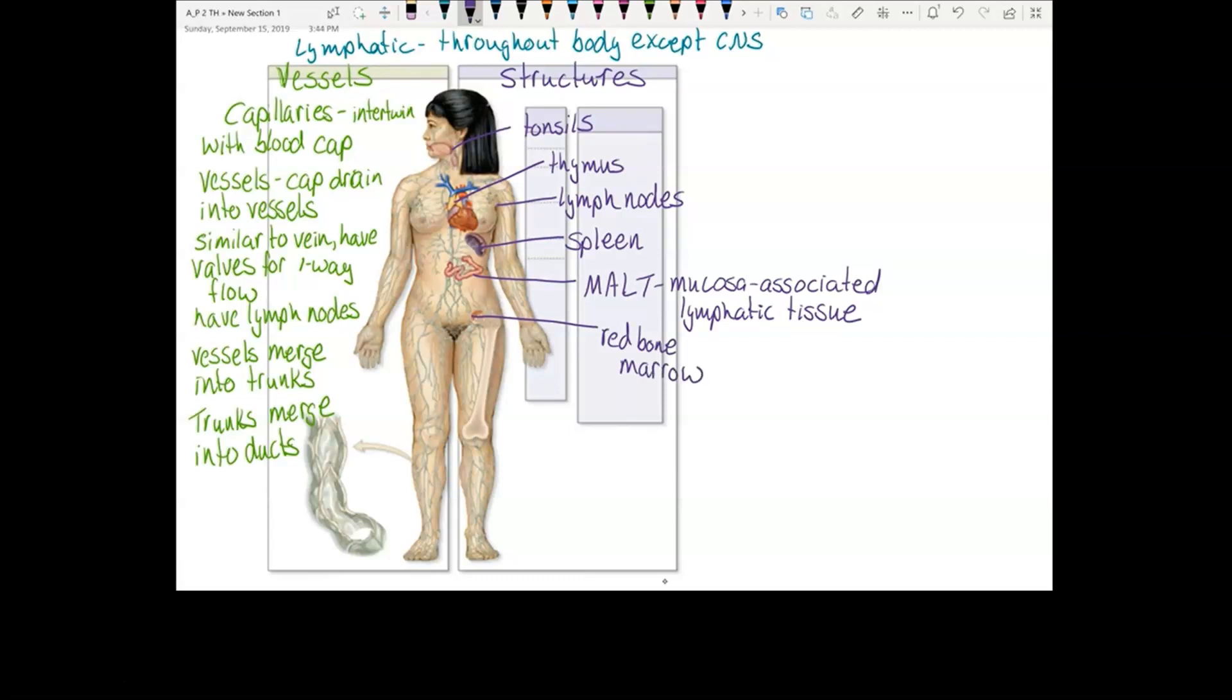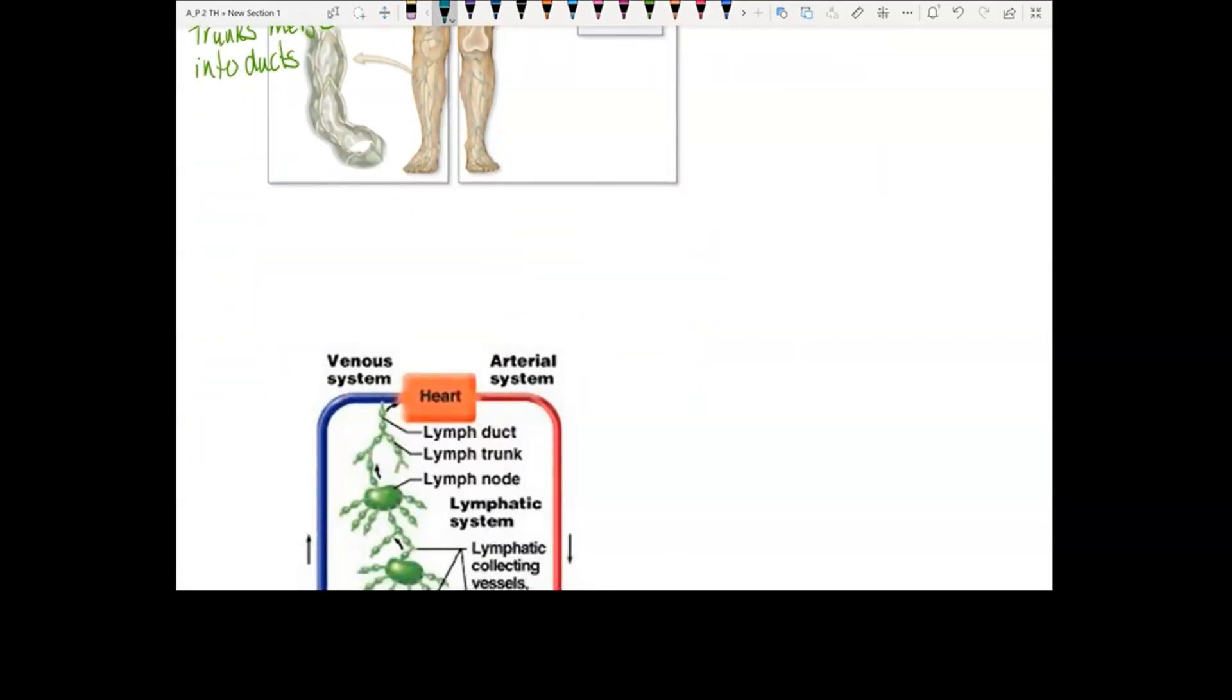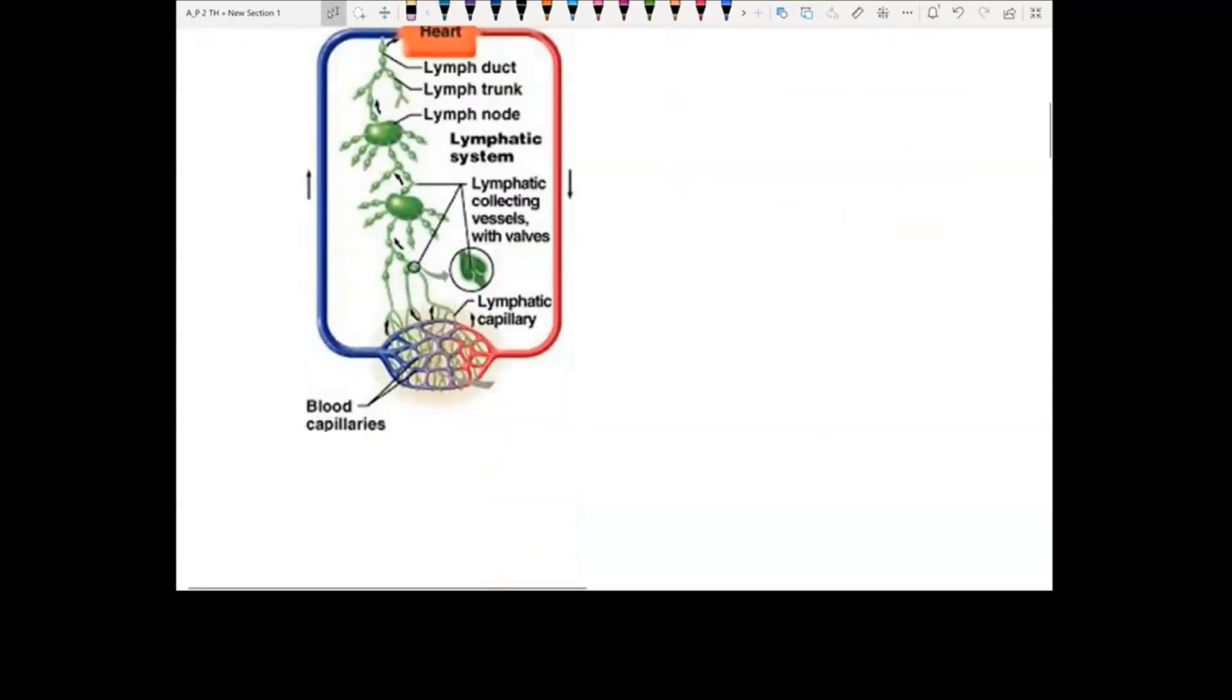In the vessel part is where you have fluid picked up that's left behind by capillaries. It flows through capillaries, vessels, trunks, ducts to the subclavian veins where it is returned to the blood. Then you also have the lymphatic structures: the tonsils, thymus, lymph nodes, spleen, MALT, and red bone marrow. That's the parts of the lymphatic system. Now let's look at the function. The lymphatic system is unique in that its function is to help other systems, and it has three other systems that it helps: the cardiovascular, the digestive, and the immune.